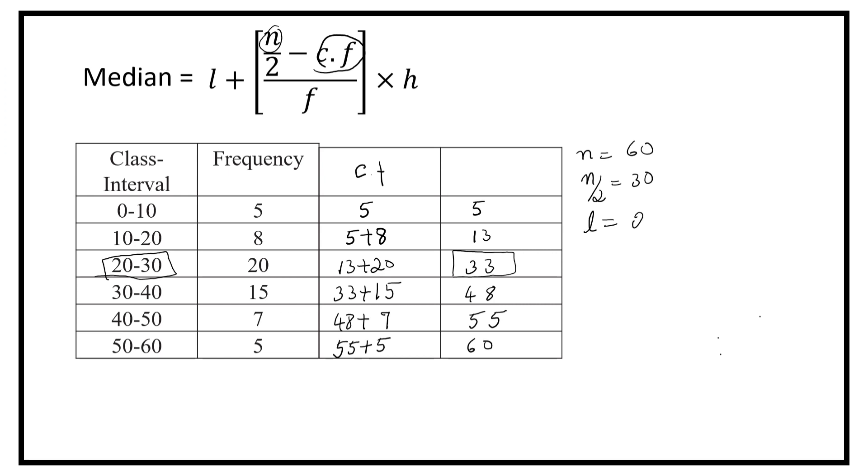Lower limit of the class interval is 20. Frequency corresponding to the class interval 20 to 30 is 20. Size of the class interval, h is equal to 30 minus 20, that is 10. Cumulative frequency is 13.